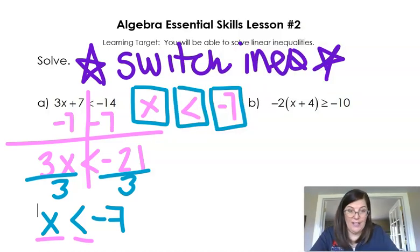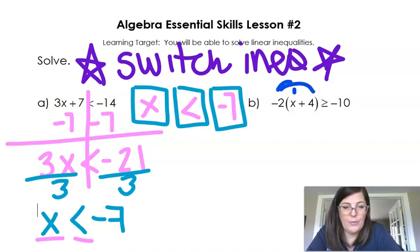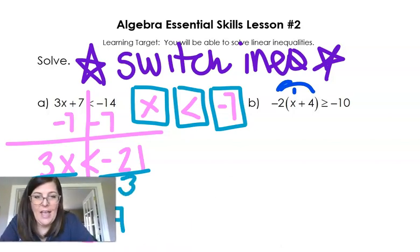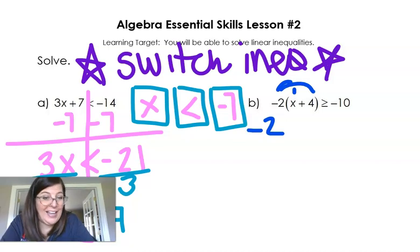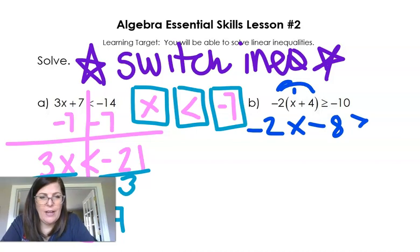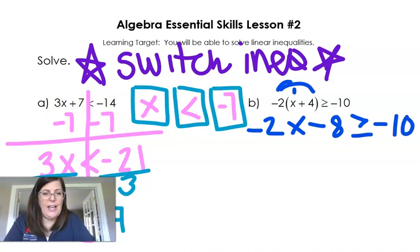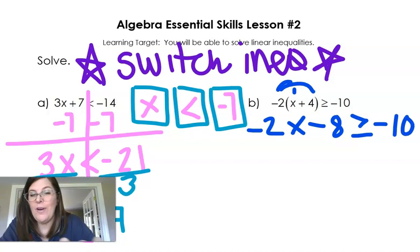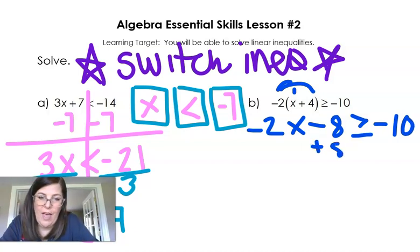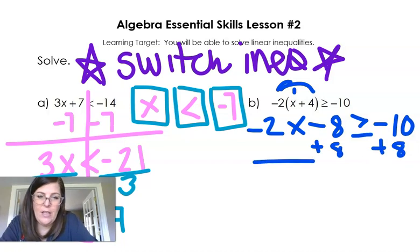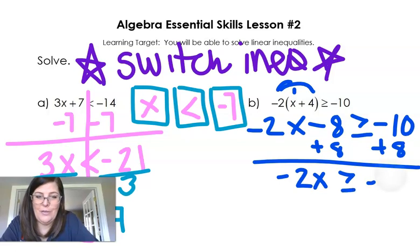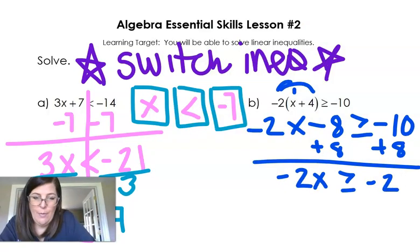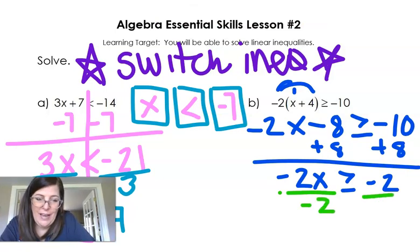So now I have solving an inequality very similar to solving an equation. First thing I'm going to do is I'm going to distribute. I've got negative 2x, negative 2 times 4 is minus 8, is greater than or equal to negative 10. So just like before, I'm going to get rid of my 8, move that over, so I add 8 to both sides. So now I have negative 2x is greater than or equal to negative 2. Now how am I going to solve this? I'm going to divide both sides by negative 2.